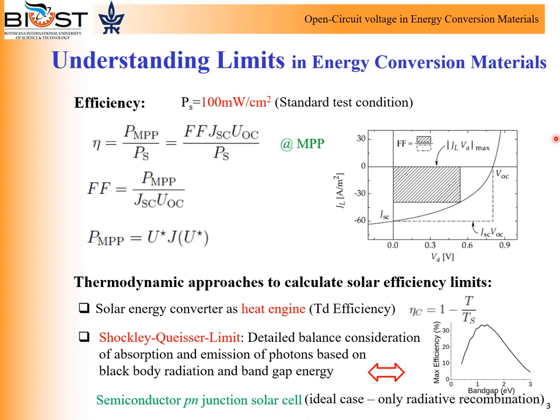In particular, this relation enables us to understand limiting factors based on underlying models for the energy conversion process, and to use thermodynamic approaches to calculate efficiency limits. First of all, a simple interpretation of a solar energy converter as a heat engine operating between sun temperature and ambient temperature will give us the so-called Carnot efficiency as an upper limit. On the other hand, the detailed balance consideration of absorption and emission of photons based on black-body radiation and band-gap energy will give us the well-known Shockley-Queisser limit of energy conversion materials. The figure here shows the maximum efficiency as a function of the band-gap.